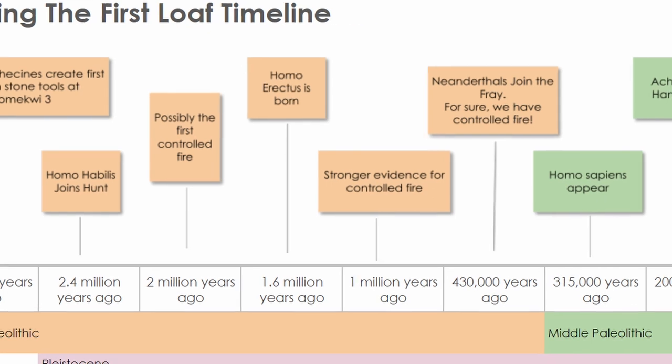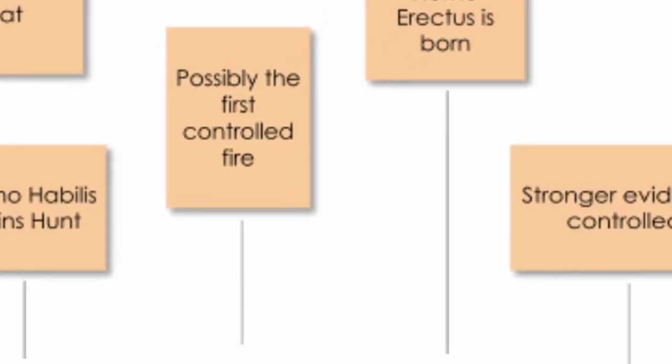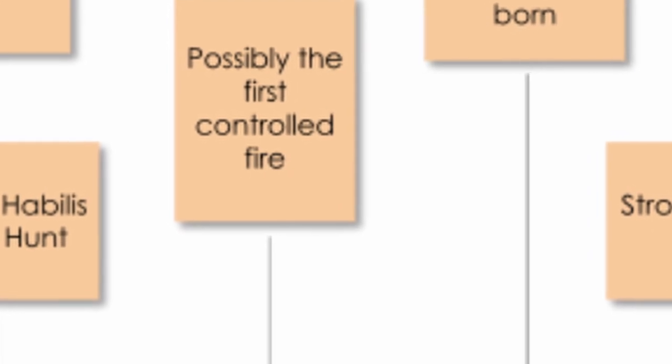Homo habilis was much the same size and shape as the earlier Australopithecines — smaller than modern man, with a smaller brain case. He walked on two legs and was found with tools; in fact, he was a big tool user. While it is possible that Homo habilis did control fire, there is currently just no evidence to support that statement. His jaw and brow ridges were smaller than Australopithecus and looked more like a modern man, with a more prominent forehead. While Homo habilis probably had the ability to make bread, there is just no evidence that he did.